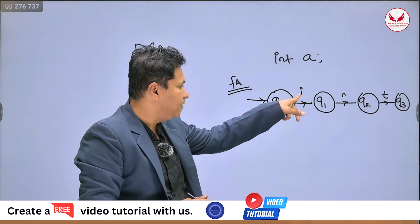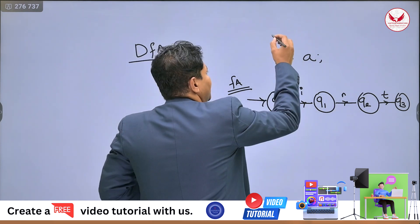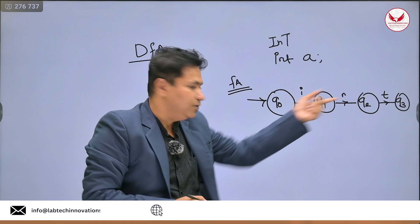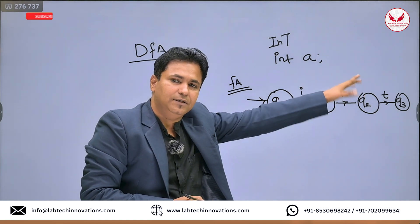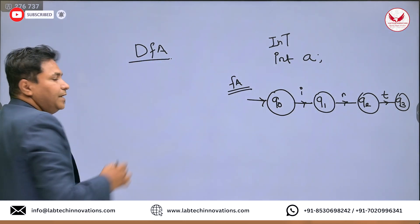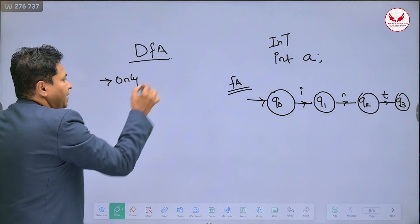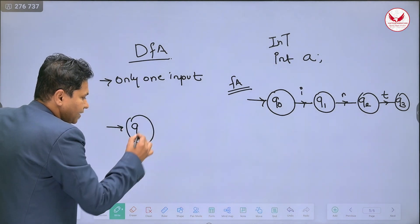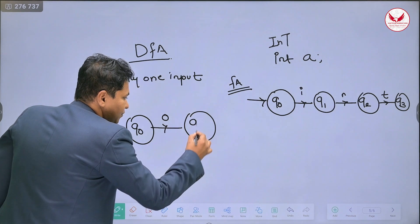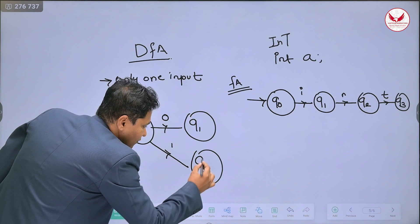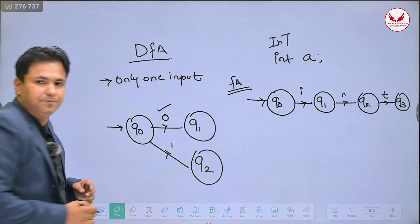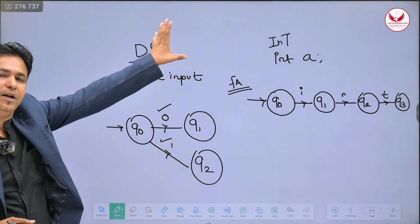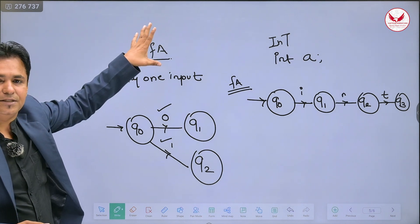In Q0 state, it checks whether 'I' has been processed. If it is there, it moves to the next state. If the input does not match, the automata does not move to the next state. In a DFA, by processing only one input you can reach the next state — for example, in Q0, by processing 0 you reach Q1, or by processing 1 you reach Q2. So by processing either 0 or 1, you reach a different state. That is known as DFA, the deterministic finite automata.